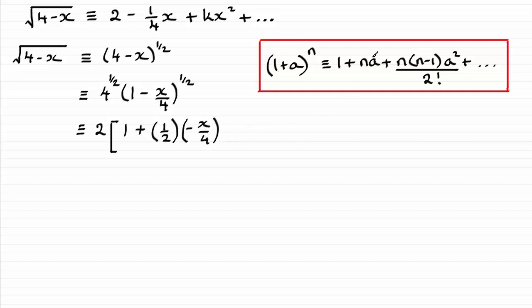Okay, so that's this term here, and now we're on this final term which is going to be plus n again, so that's a half, and then we subtract 1 from a half and that's going to be minus a half, and we multiply it by a squared. In other words, for us in this example, it's minus x over 4 all squared, and it's all divided by 2 factorial.